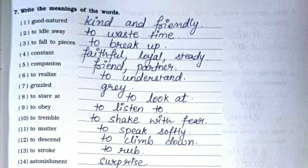Question number seven: Write the meanings of the words. First: kind and friendly. Second: to waste time. Third: to break up. Fourth: faithful, loyal or steady. Fifth: friend or partner. Sixth: to understand. Seventh: grey. Eighth: to look at. Ninth: to listen to. Tenth: to shake with fear. Eleventh: to speak softly. Twelfth: to climb down. Thirteenth: to rub. Fourteenth: surprise.